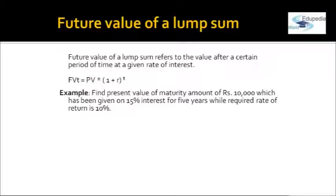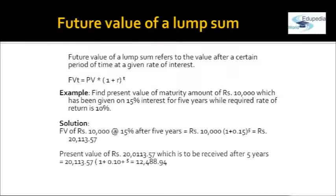For example, compute the present value of the maturity amount of rupees 10,000 invested at 15% interest for five years, while the required rate of return is 10%. The future value of 10,000 at 15% equals 20,113. So you will receive 20,113 by investing 10,000 today — but this is received after five years. To find the present value of that 20,113, you discount it by the required rate of return of 10%, giving approximately 12,488 rupees today.